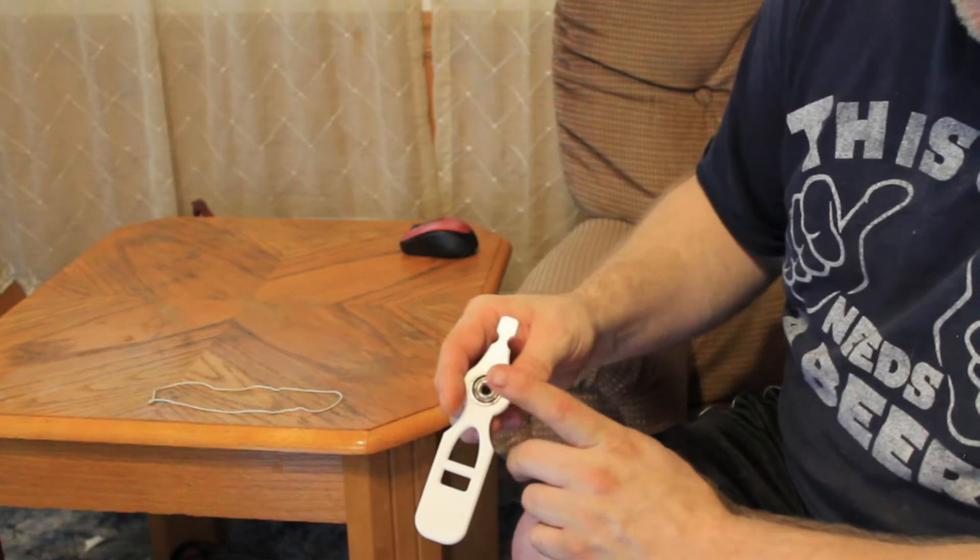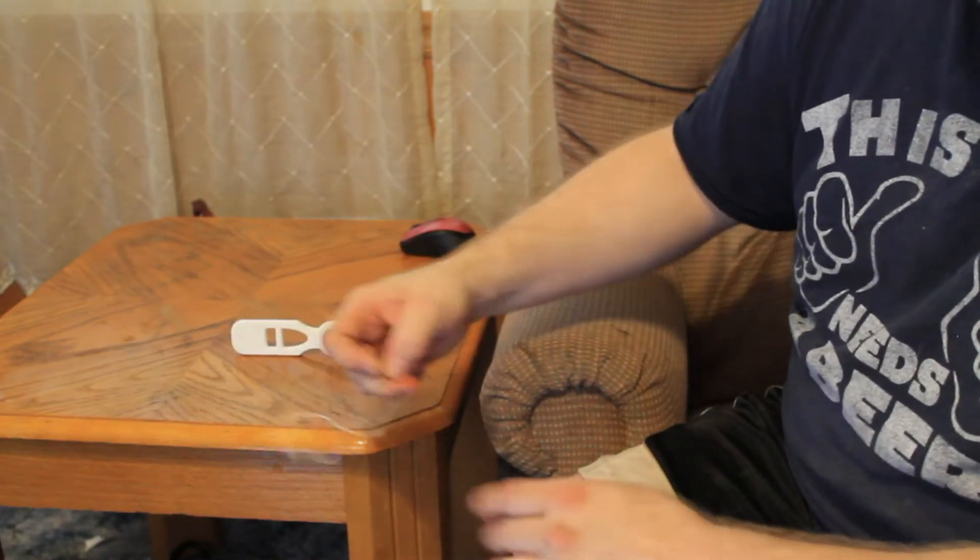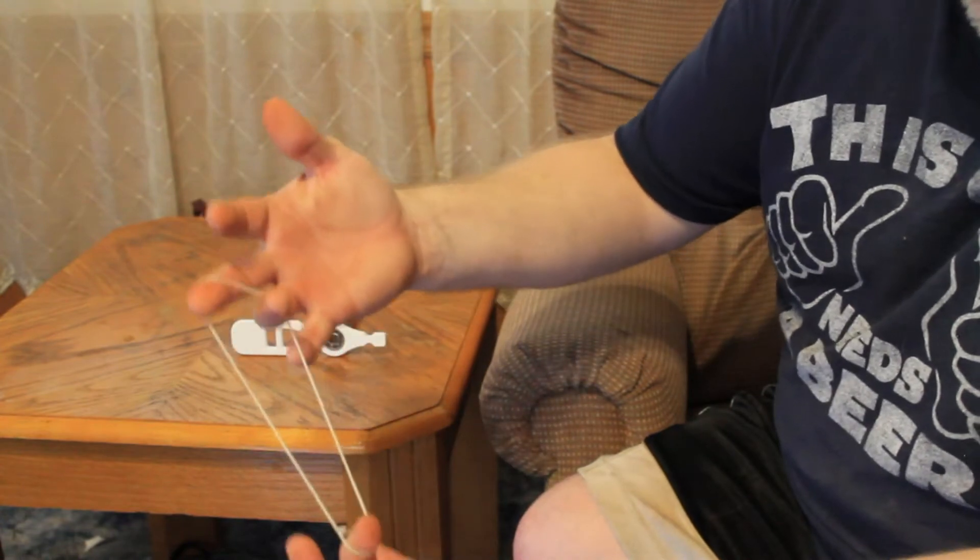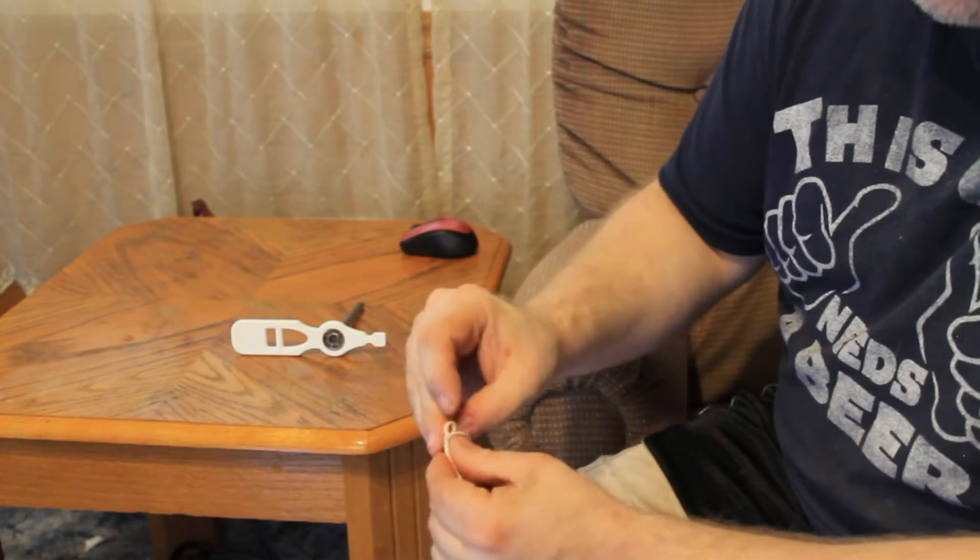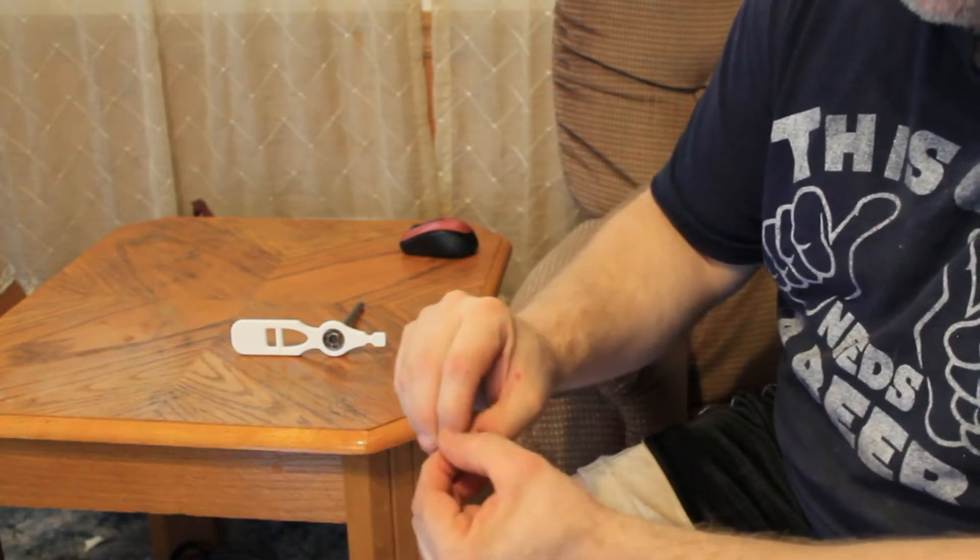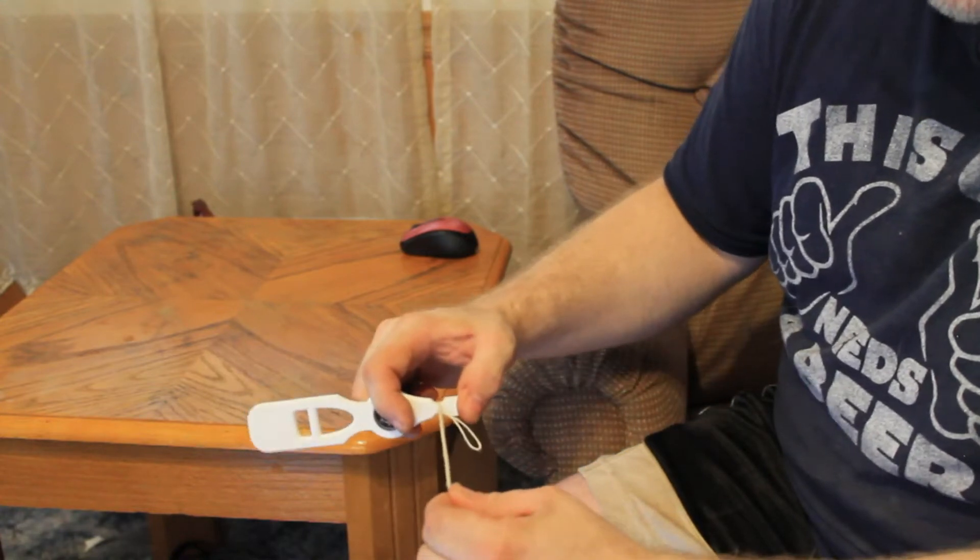To attach your yarn onto the spinner, I'm starting out with a leader. I just have a length of cotton warp here, you can use yarn, you can use whatever you want to, and I'm going to make a slipknot. So I'm setting it over the groove and pulling it tight.